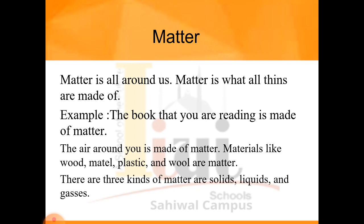There are three kinds of matter: solids, liquids, and gases. A chair or a book, for example, are solids. If we take a plastic bottle, it is also a solid. Water is an example of a liquid, and a cup of tea is also liquid. Air is a mixture of gases, so it is in gaseous form, but it is also matter. Water vapors are in steam form, but as they condense they become liquid. So these are the three types of matter: solids, liquids, and gases.